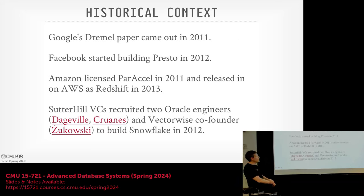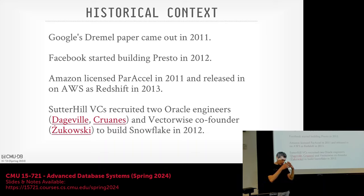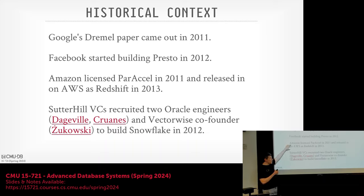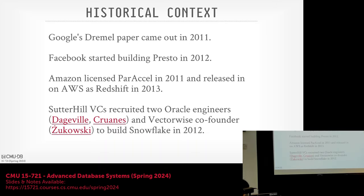The Dremel paper came out in 2011 and showed you could build something in a cloud-native environment to run on files sitting on object stores, where storage is no longer natively managed by the database system. Facebook started building Presto in 2012. AWS bought a license to ParAccel in 2011 and released it in 2013 as Redshift, actually beating Snowflake to market by a couple of months.